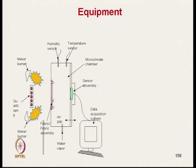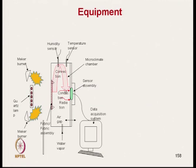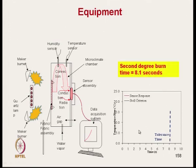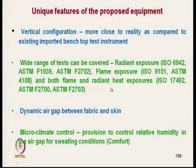Once the shutter is removed, the fabric receives heat from the flame or radiant source. This heat is transmitted through the fabric and measured by the skin simulant sensor. Temperature versus time data is collected, and from the resulting curve we can measure the second degree burn time. For example, a second degree burn time of 8.1 seconds was obtained from this curve.